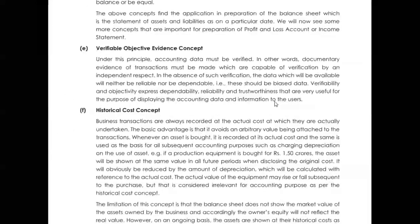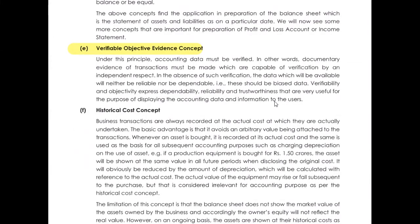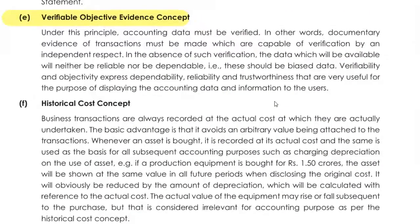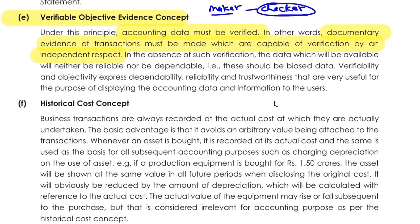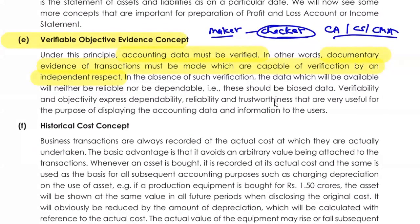Next is the verifiable objective evidence concept: accounting data must be verified. There should be one maker who prepares the data and one checker who checks it. The documentary evidence of transactions must be made, capable of verification by independent parties — for example, a chartered accountant, company secretary, or cost and management accountant. For big organizations, chartered accountants and CMAs make the data, which is then checked by seniors.